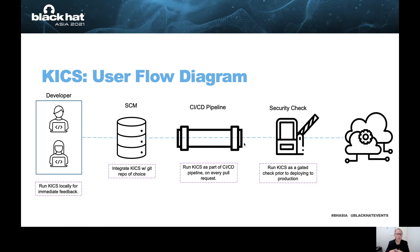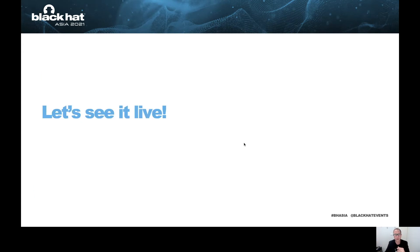Let's talk about how you can integrate KICS into your flow. You can have each developer run it locally — they fetch the Docker image from Docker Hub and run it before pushing infrastructure code. You can integrate it with your repository so it runs on every pull request or merge to master. You can have it as part of a pipeline, which we'll see in the demo. And you can also have it as a security gate, making sure that as you move from testing to staging to production, you are also testing your infrastructure as code.